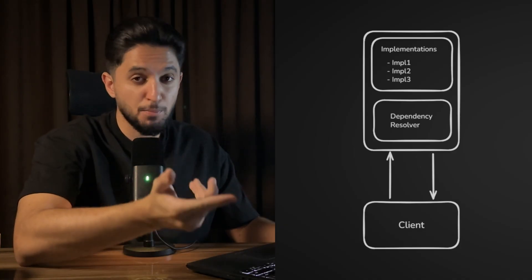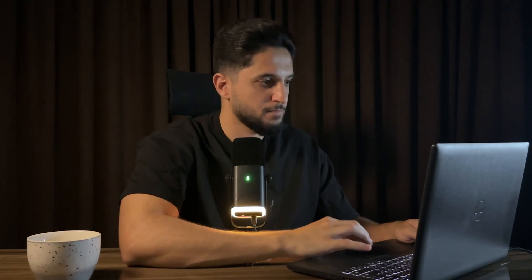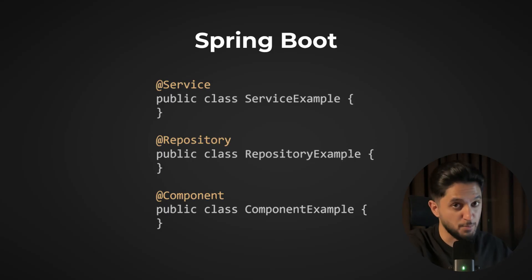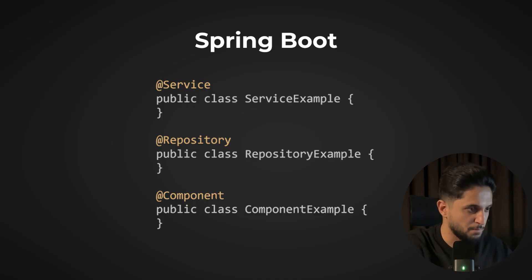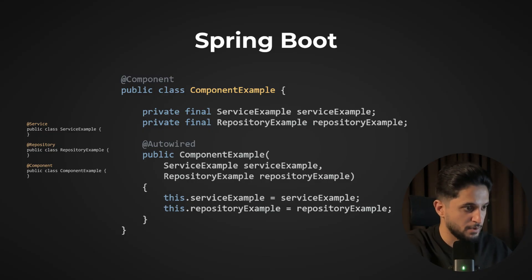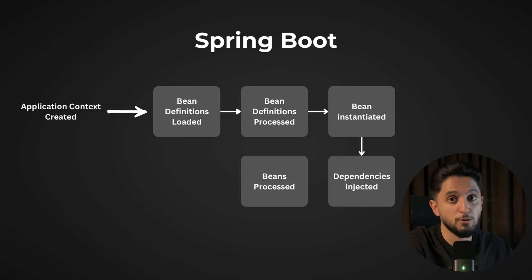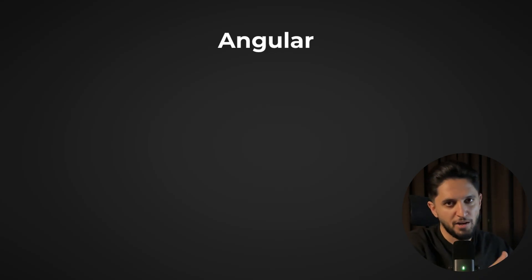In Spring Boot, you don't manually create most of your objects. Instead you mark them as beans using annotations like @Component, @Service, or @Repository. Then you can inject them into other classes with @Autowired or constructor injection. Under the hood, Spring's IoC container — also called the application context — creates, prepares, and auto-wires all of those beans.